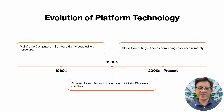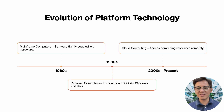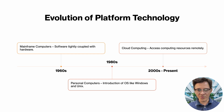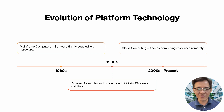Then came the 1980s, bringing with it a revolution — the personal computer, or PC. This was a game-changer because, for the first time, operating systems like Microsoft Windows and Unix allowed users to install and run software independently of the hardware. Developers no longer had to write software for just one type of machine. Instead, they could build applications that worked across different devices. This era introduced software platforms, making computers more flexible and accessible.